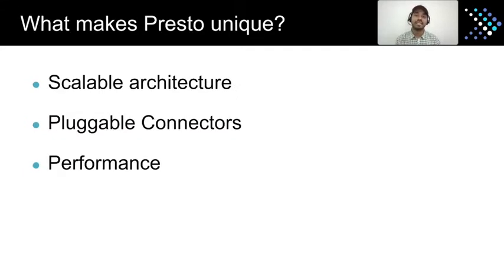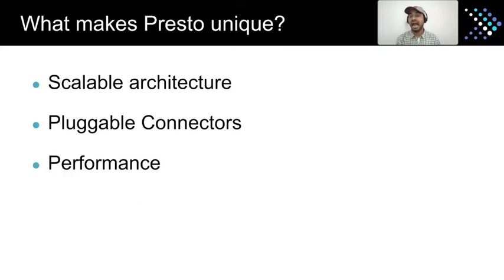What makes Presto different from other engines like Spark? Spark was built to be a general-purpose computational engine, whereas Presto is meant to be a SQL engine. It is highly scalable, has a pluggable architecture with a range of connectors, and is built for performance as an in-memory engine with a pipeline architecture.